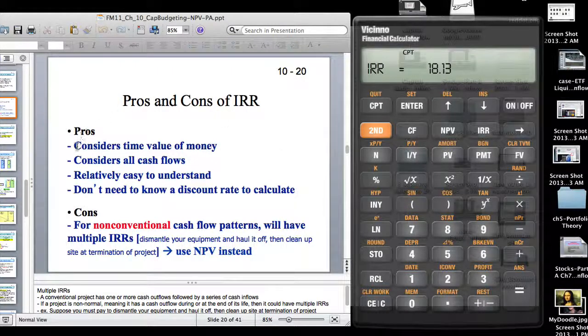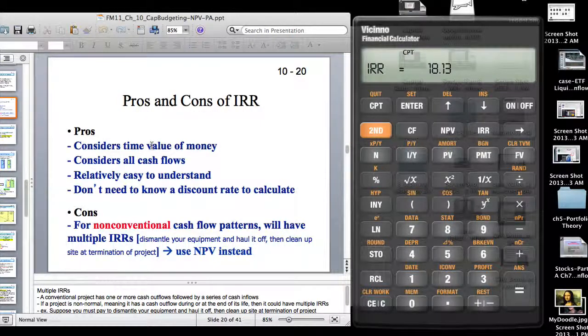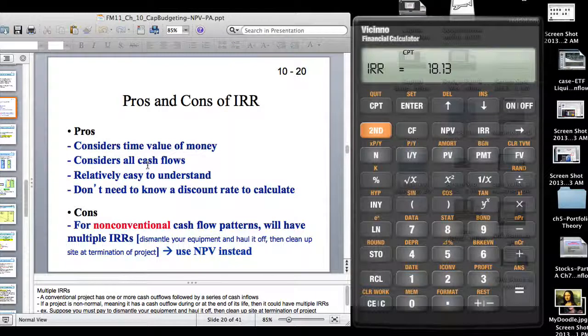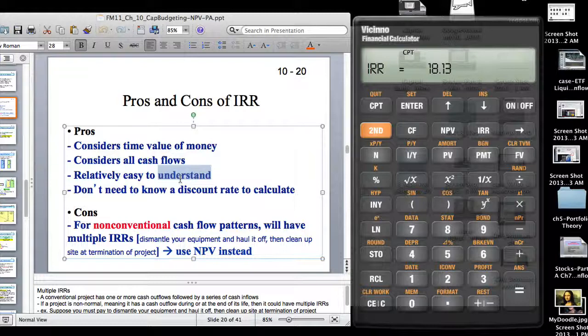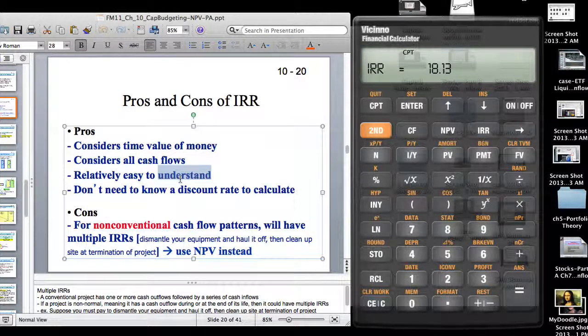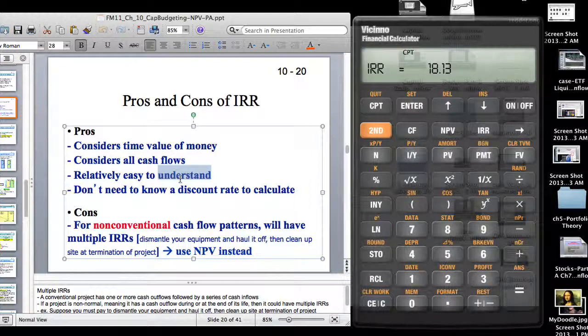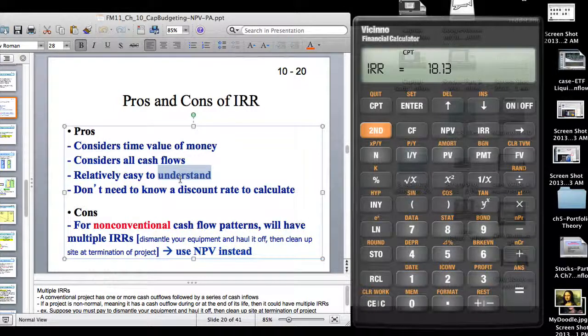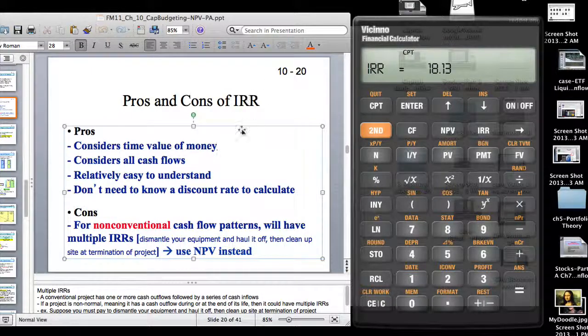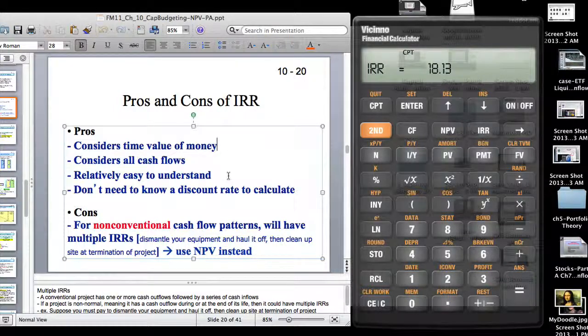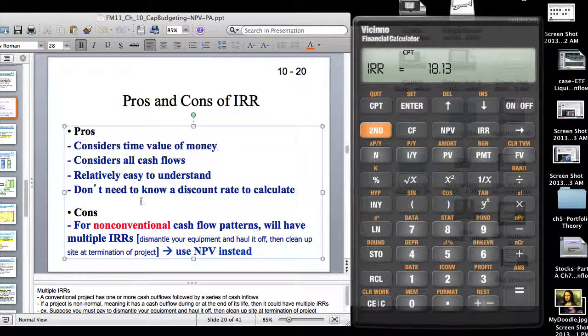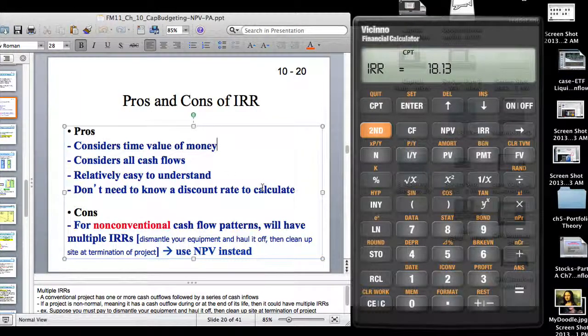As you know, it's never simple. The good thing about IRR: it considers time value of money, considers all cash flows, relatively easy to understand. This is one of the main reasons why it is preferred by corporate managers as opposed to NPV even today because they like to see a percentage number. Also, suppose you're investing 300 million dollars in a project and the NPV of that project is 150,000 dollars. The company may not accept that project because it's not worth the 250 million.